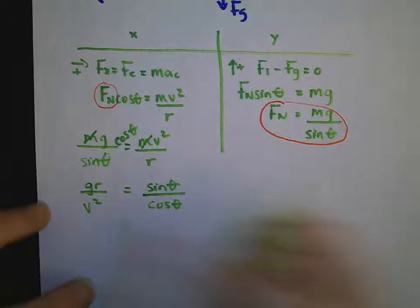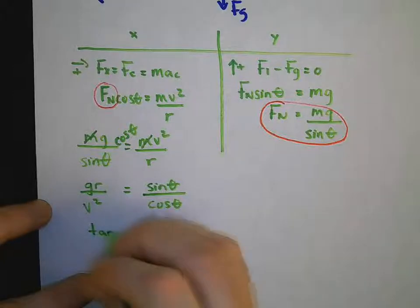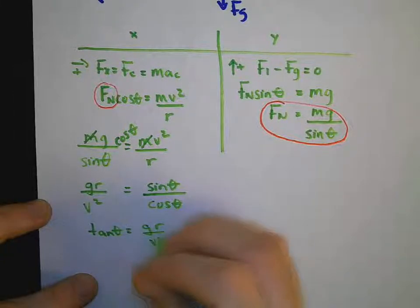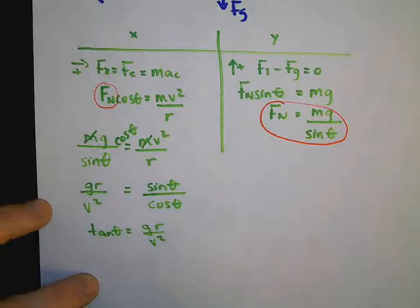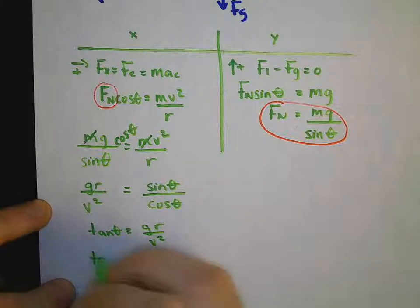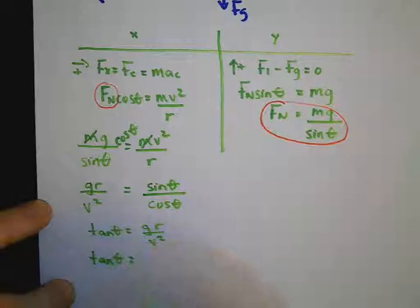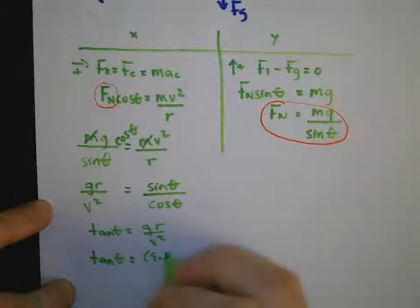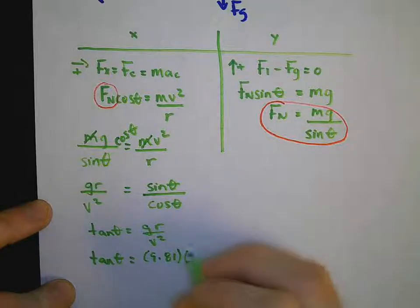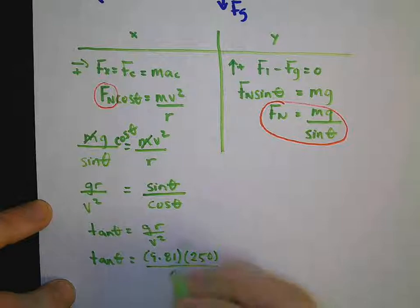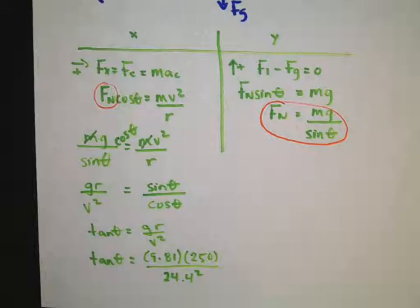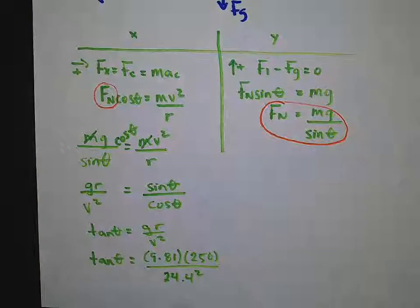Which is handy, because what we now have is that tan theta is gr over v squared. So therefore, tan of angle theta is 9.81 multiplied by 250 all over 24.4 squared. Oh, I forgot to mention that. 24.4, where did that come from?